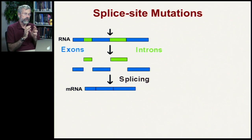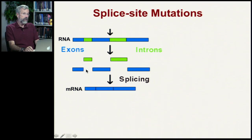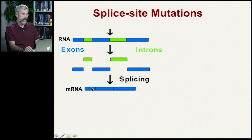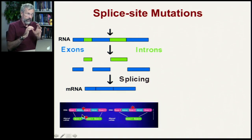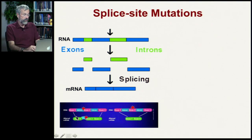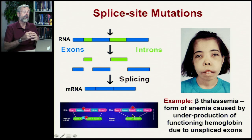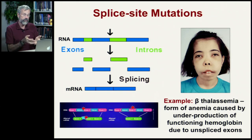Finally, today we're going to look at splice site mutations. Because we have pre-messenger RNA with introns and exons, the machinery of transcription normally reunites the exons in the right order so they can be translated into a functioning protein. But sometimes the introns are removed along with some of the exons. In a normal case you have three exons spliced together to form a functional mRNA, but in a splice site mutation a section is missing — only the first and third exons remain, the second is gone. One fairly common example is beta thalassemia, a form of anemia caused by underproduction of functioning hemoglobin due to these unspliced exons.